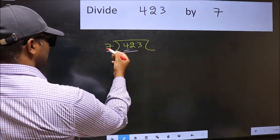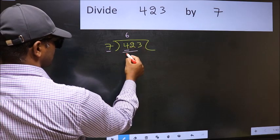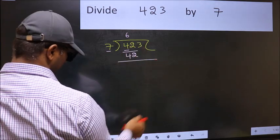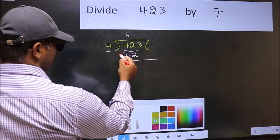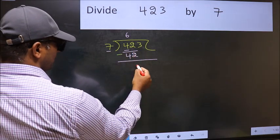When do we get 42 in 7 table? 7 times 6, 42. Now you should subtract. 42 minus 42, 0.